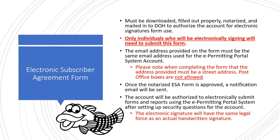Only individuals who will be electronically signing will need to submit this form. The email address provided on the form must be the same email address used for the e-Permitting Portal system account. Please note when completing the form that the address provided must be a street address — post office boxes are not allowed. Once the notarized ESA form is approved, a notification email will be sent. The account will be authorized to electronically submit forms and reports using the e-Permitting Portal system after setting up security questions for the account.